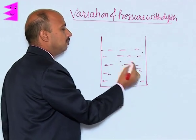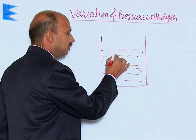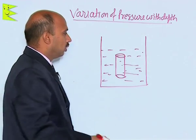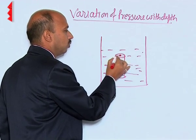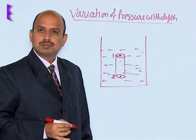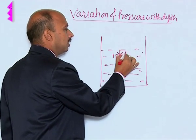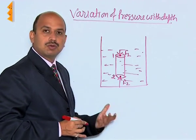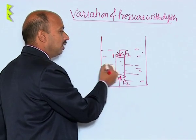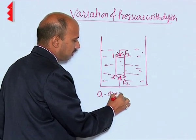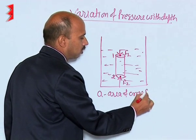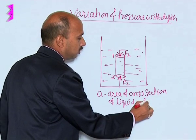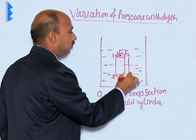Suppose this liquid is in equilibrium at rest. Imagine a liquid cylinder here — this liquid cylinder has point 1 at the top and point 2 below it. The force acting downward is F1 and the force acting upward is F2. A liquid at rest exerts force perpendicular to the surface. The area of cross-section is A and the height of this liquid cylinder is H.